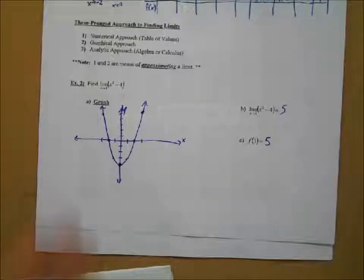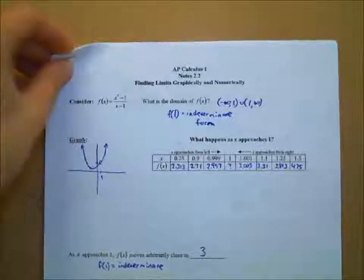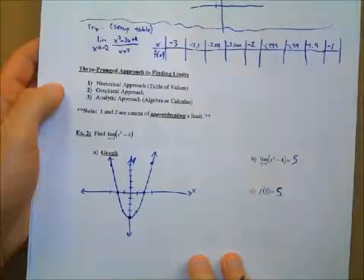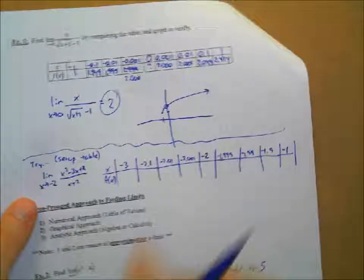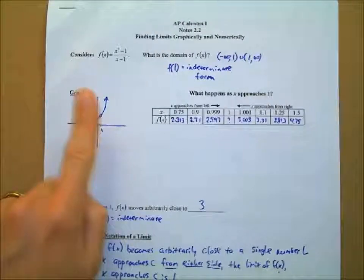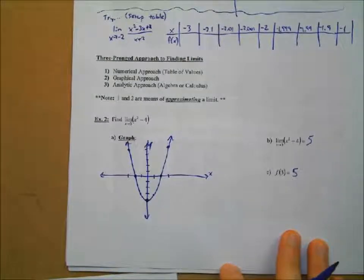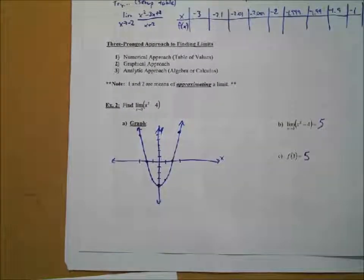What's different about this function compared to the previous two? Amy answered: there's no hole. Correct — these other functions were discontinuous at certain locations. This function is continuous everywhere — one smooth curve. And so the limit and the function value end up being the same no matter where you look.